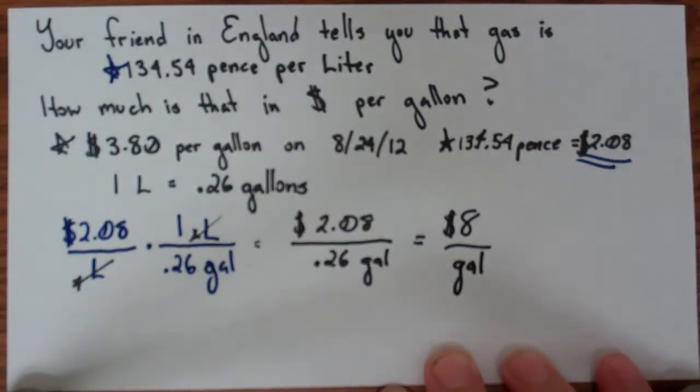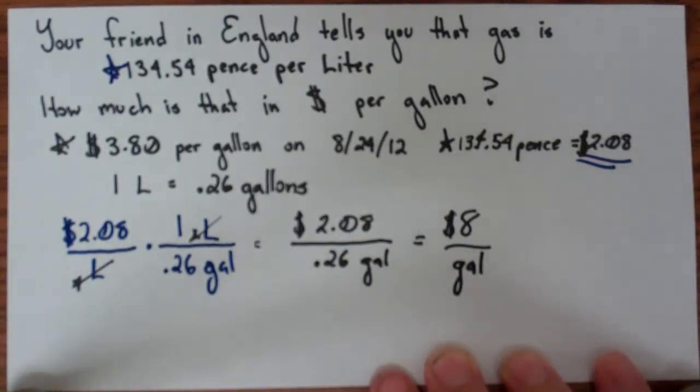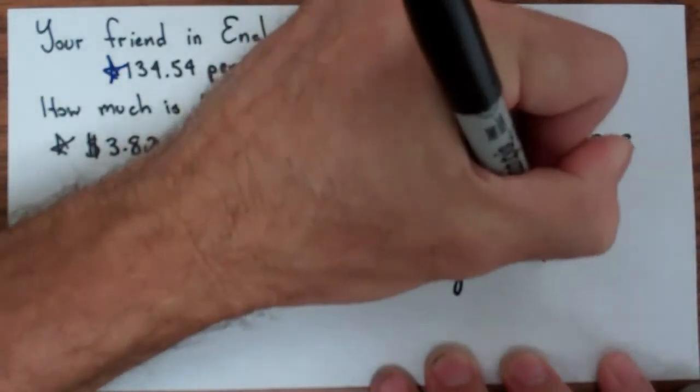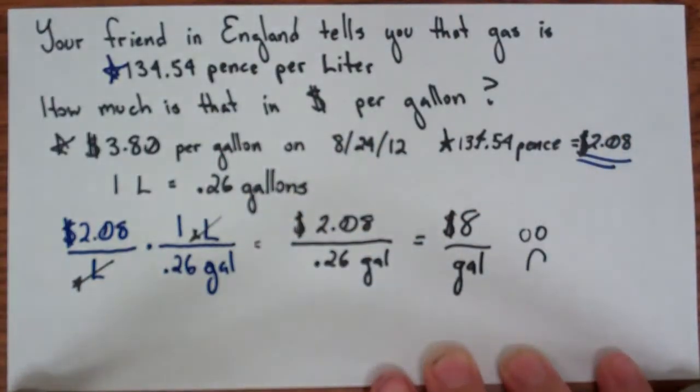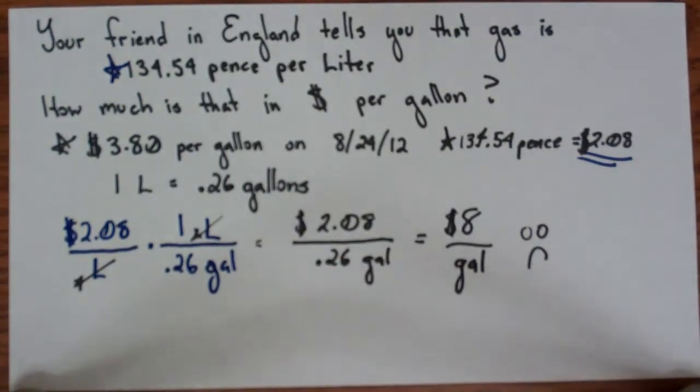And so you've got $8 per gallon. So we're currently spending a little less than $4 per gallon and in England they're spending $8 per gallon. And so usually we put a happy face here but I'm going to put a sad face here because that is no bueno. Alright, so those are three examples of measurement conversions, I hope you find that helpful. I'll see you next time.